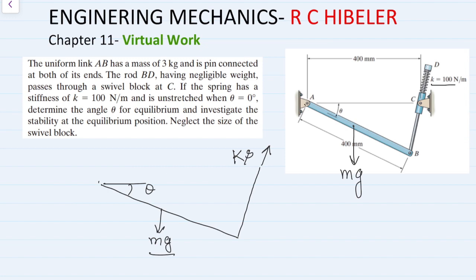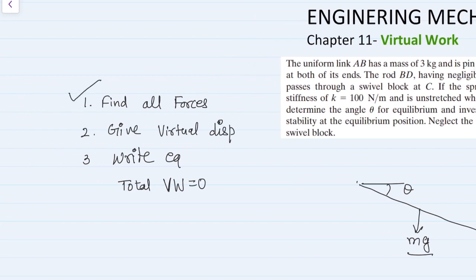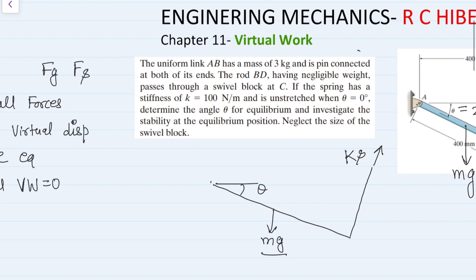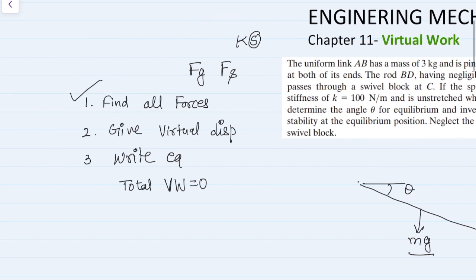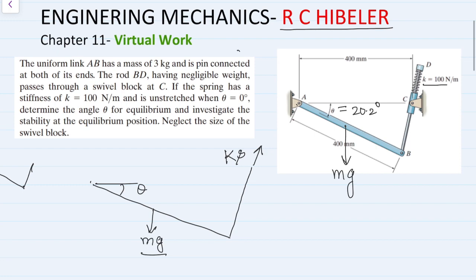This is the final answer: theta = 20.2 degrees, found using the principle of virtual work. To summarize: first, calculate all forces (gravity and spring); second, find initial spring deformation using geometry; third, give a virtual displacement and write the total virtual work equation with correct signs; finally, differentiate to get δy and δs in terms of δθ, substitute, and solve. This problem is taken from R.C. Hibbeler, Chapter 11.